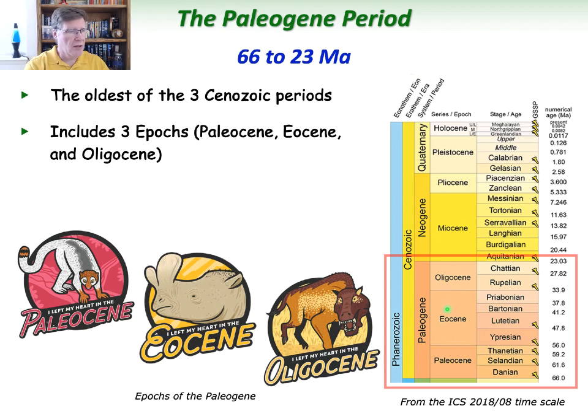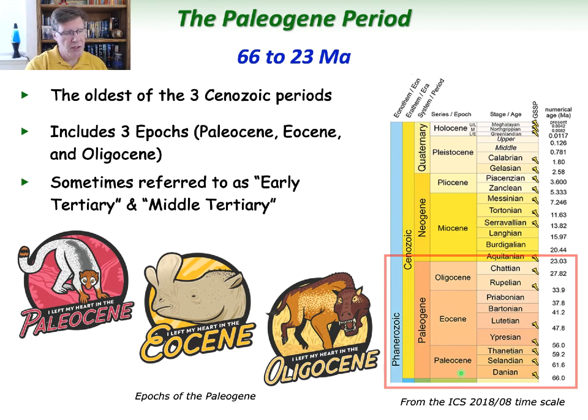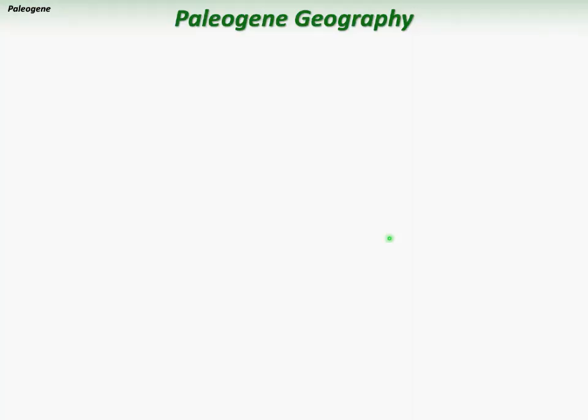Sometimes the whole Paleogene period is referred to as the Early Tertiary, which used to span the time from 66 million all the way to the Quaternary. The first half or so was sometimes called Early Tertiary, which is roughly what the Paleogene is. Some people actually split the Tertiary into three parts: an Early, Middle, and Late Tertiary.